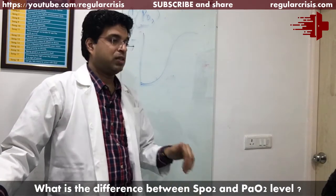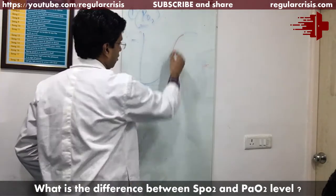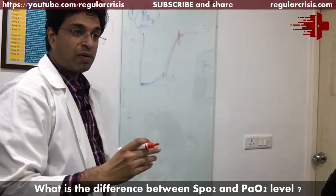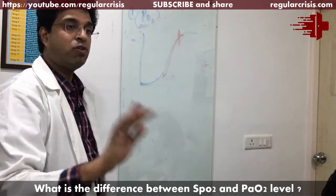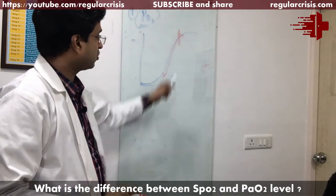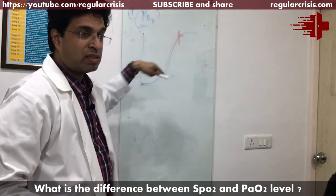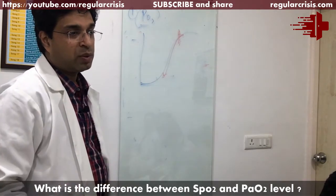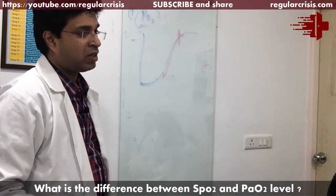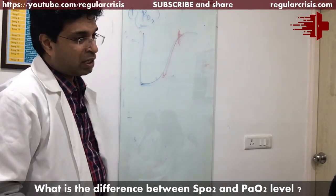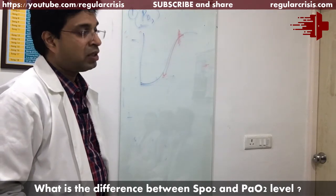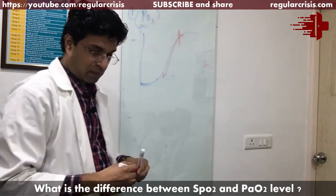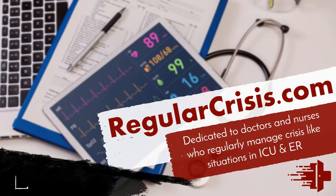That is why it is required to maintain SpO2 above 90% in every ICU patient, other than COPD patients. If SpO2 is less than 90%, there will be a drastic fall in PO2 level in the blood. Even in ARDS, we say SpO2 of 88% or PO2 more than 52 should be maintained. So the difference between SpO2 and PO2 is now clear.